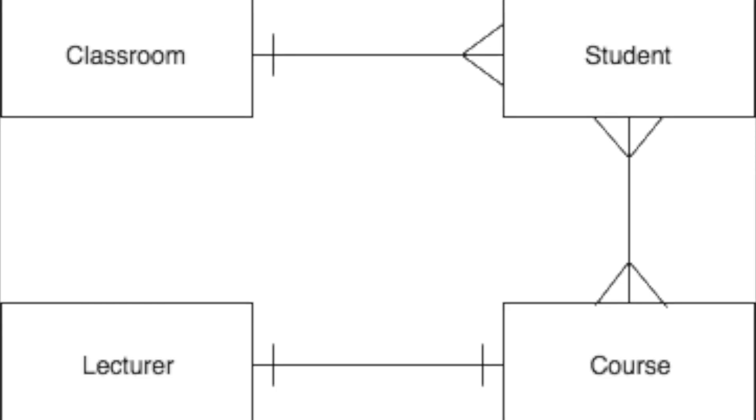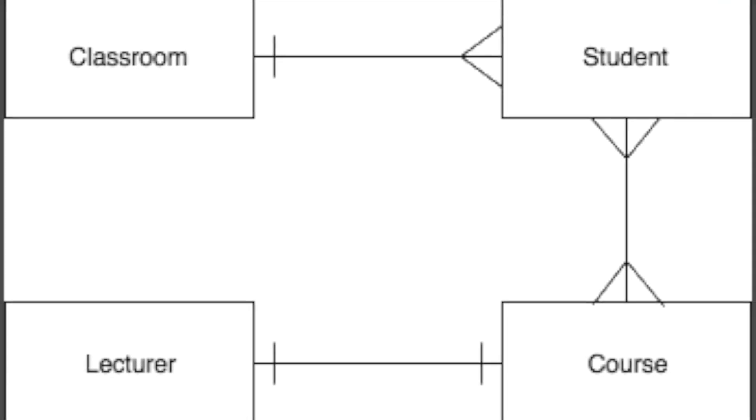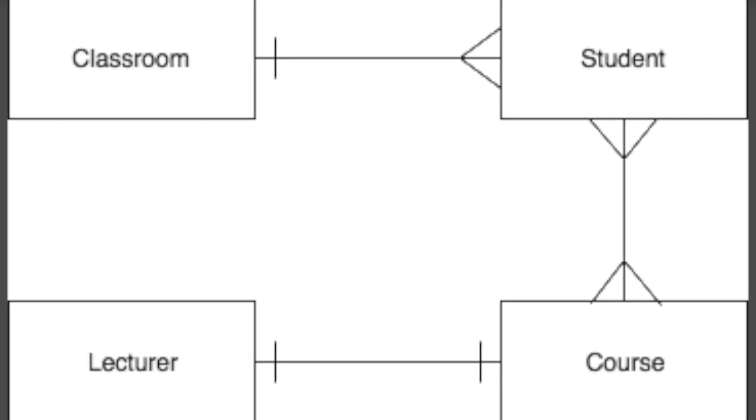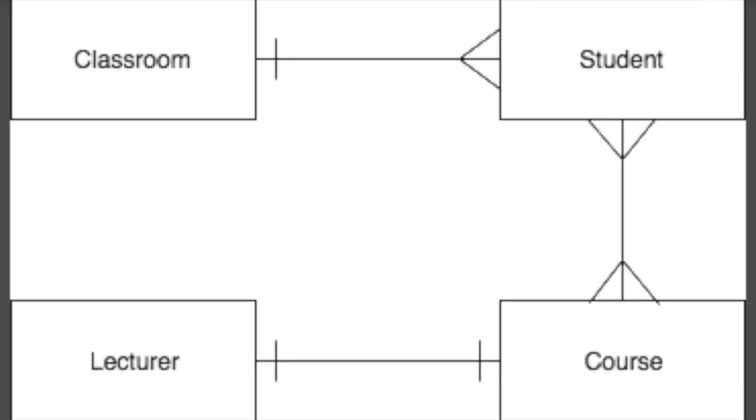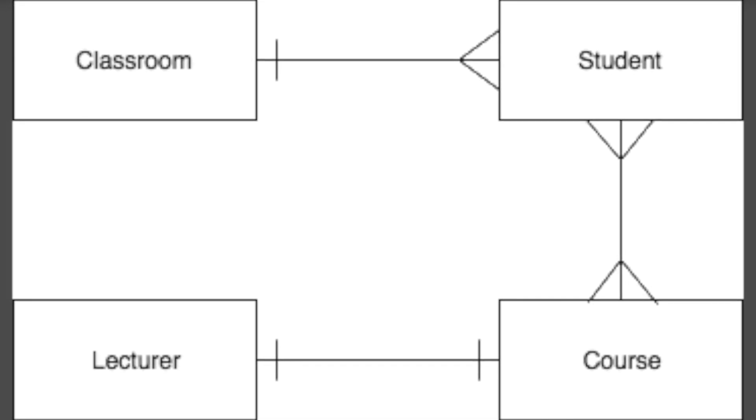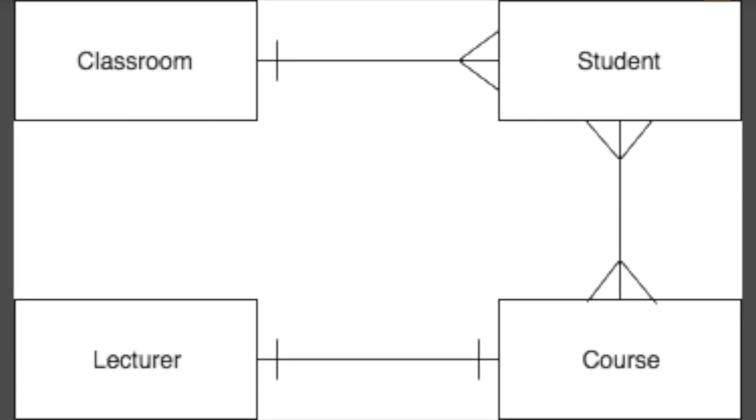We're going to work through how to create complex table associations or relationships with CRUD — create, read, update, and delete operations. The associations will be like this diagram: one classroom has many students and a student has one classroom; many students take many courses and vice versa; one course has one lecturer and one lecturer teaches one course.